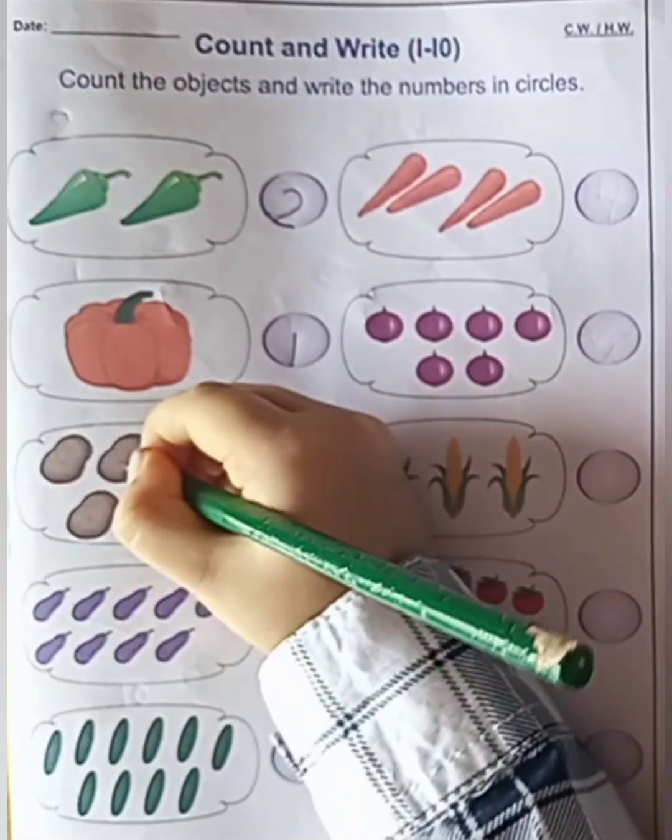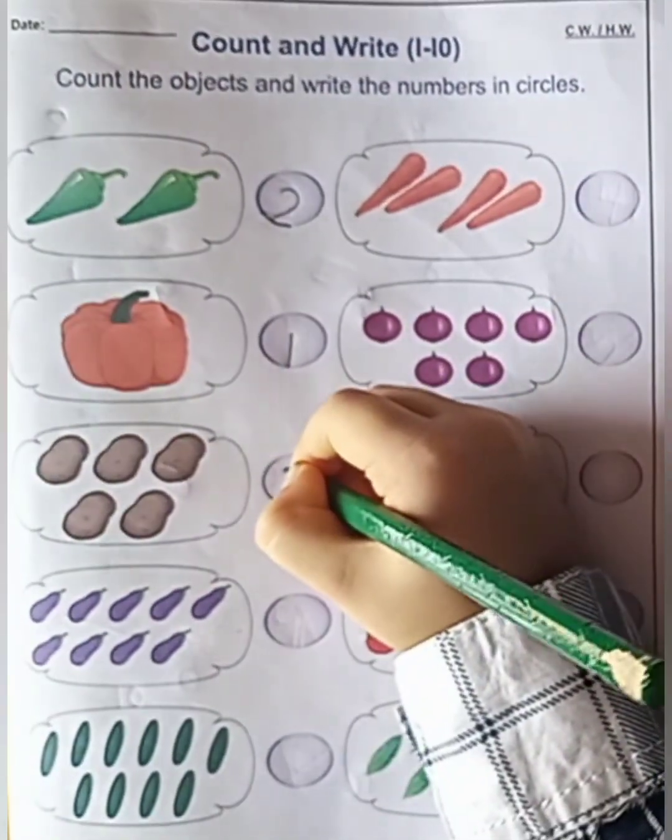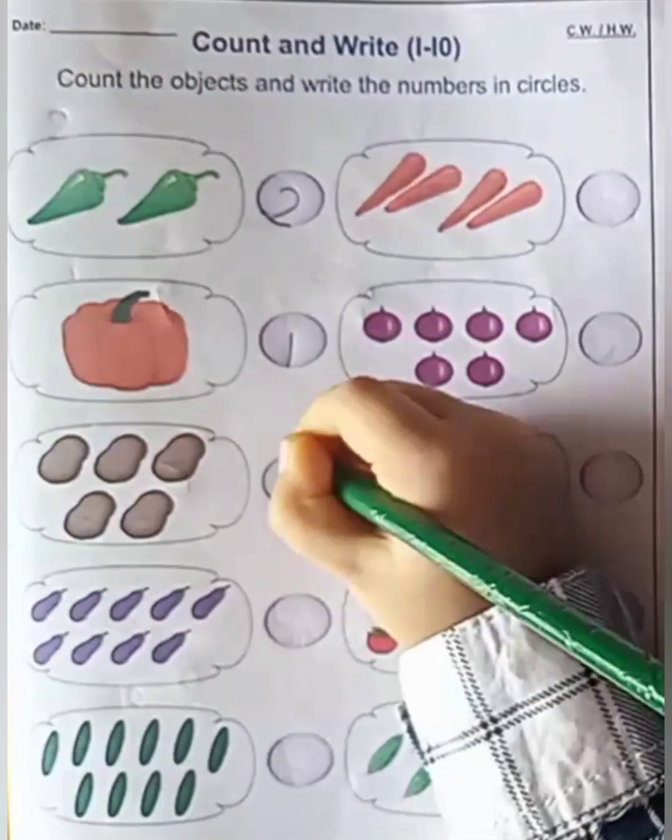Next. One, two, three, four, five. What is this? Five potatoes.